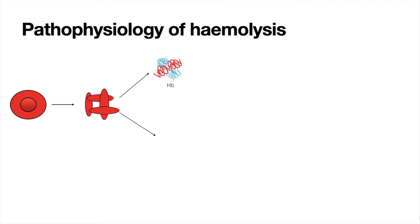When the red blood cell undergoes hemolysis, it will release a number of substances. The red blood cell contains things like haemoglobin, which is a very important protein for the transport of oxygen, and it will also contain LDH and potassium. The patient's investigation showed a raised LDH, highlighted in the red box, because increased hemolysis and increased destruction of red blood cells leads to increased LDH released into the blood, detectable on laboratory assessment.